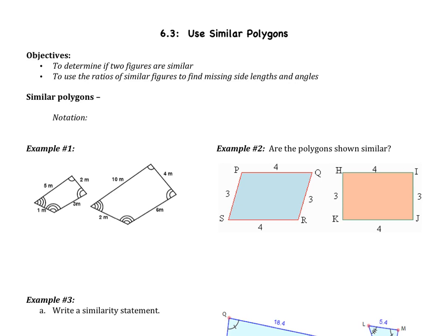Welcome to section 3, which is on similar polygons. We have two objectives for today. First, we're going to determine if two figures are similar, and then we're going to use the ratios of similar figures to find missing side lengths and angles.